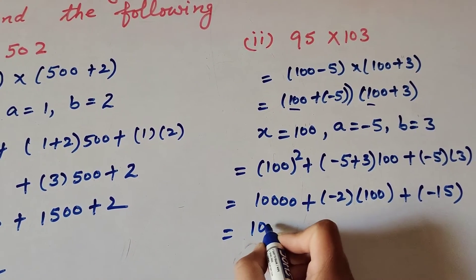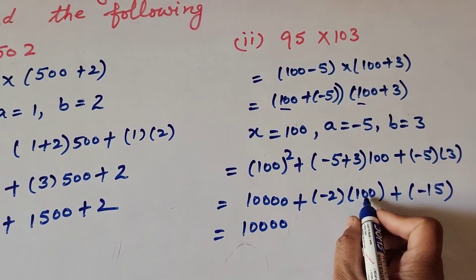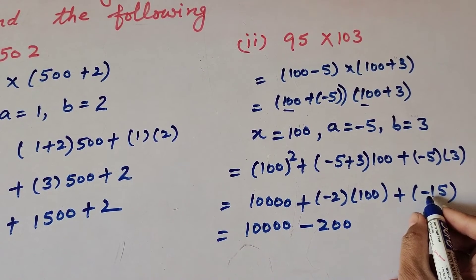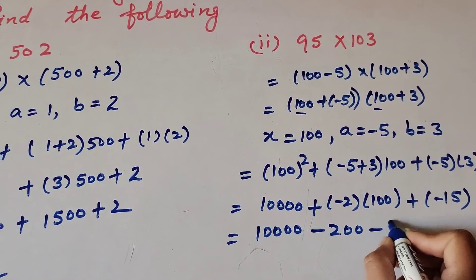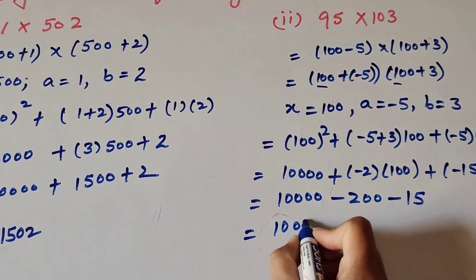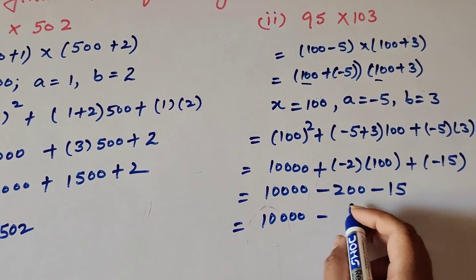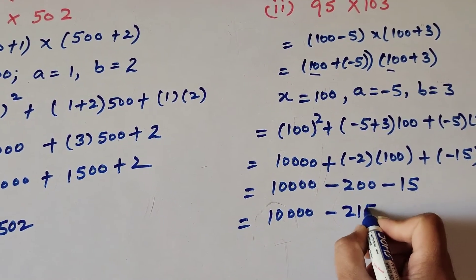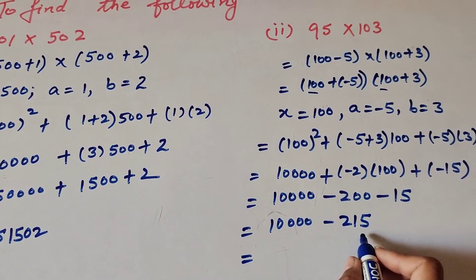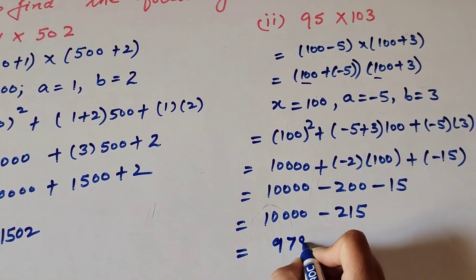So we have 10,000 − 200 + (−15) = 10,000 − 215 = 9,785. Therefore, the product of 95 × 103 is equal to 9,785.